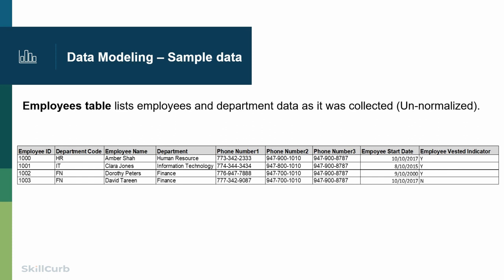We have been given this employee table and are tasked to normalize it up to the third normal form. We have employee ID which uniquely identifies an employee, department code that is unique for a department, employee name, department, three columns that have phone numbers, employee start date, and employee vested indicator. That's the data we are dealing with, and we have to take this table through the normalization process from first normal form up to the third.